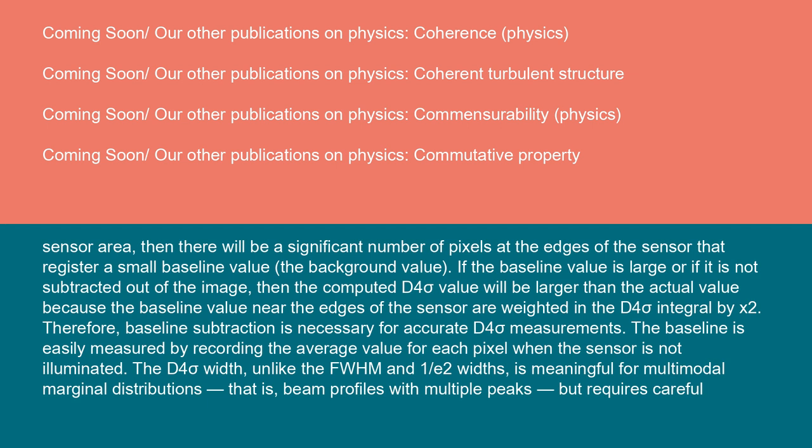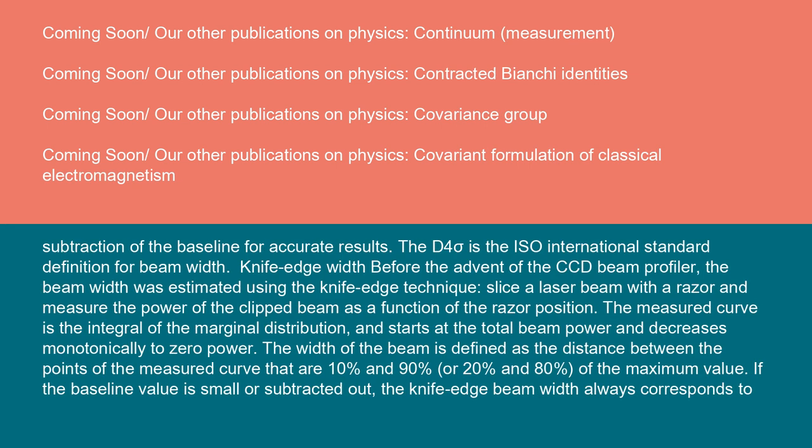Therefore, baseline subtraction is necessary for accurate D4 sigma measurements. The baseline is easily measured by recording the average value for each pixel when the sensor is not illuminated. The D4 sigma width, unlike the FWHM and 1/e² widths, is meaningful for multimodal marginal distributions, that is beam profiles with multiple peaks, but requires careful subtraction of the baseline for accurate results. The D4 sigma is the ISO international standard definition for beam width.